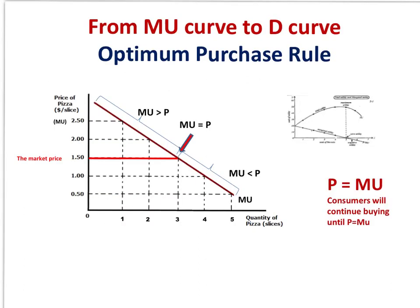Suppose I am a consumer and I am going to a shop to buy some pizza slices. When I buy each additional slice I am not going to pay a lower price for it. I will pay the market price for each slice that I buy, and that is the same price for each one.